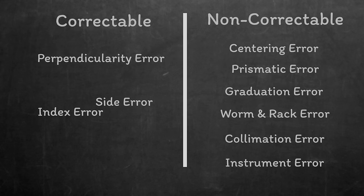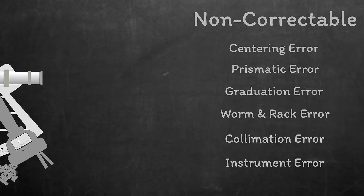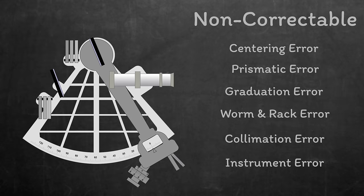One error, collimation, actually used to be correctable, but on modern sextants, it's more usual for it to be non-correctable nowadays. Let's start by looking at the non-correctable errors. We'll just go through quickly as you can't correct for them anyway.